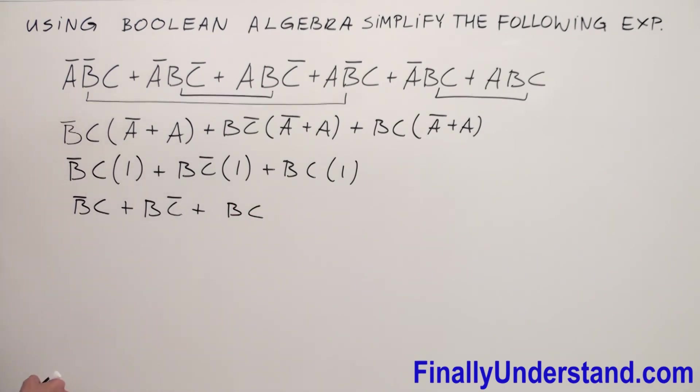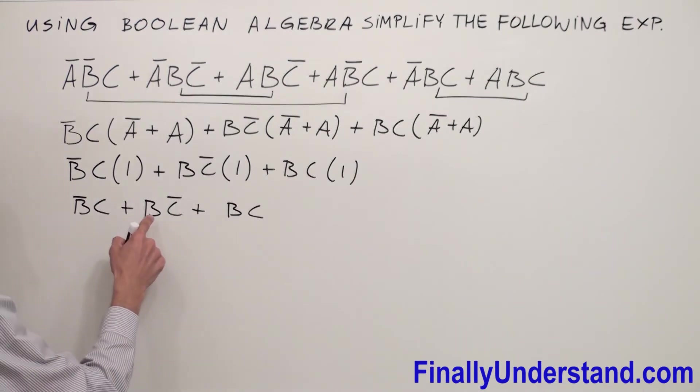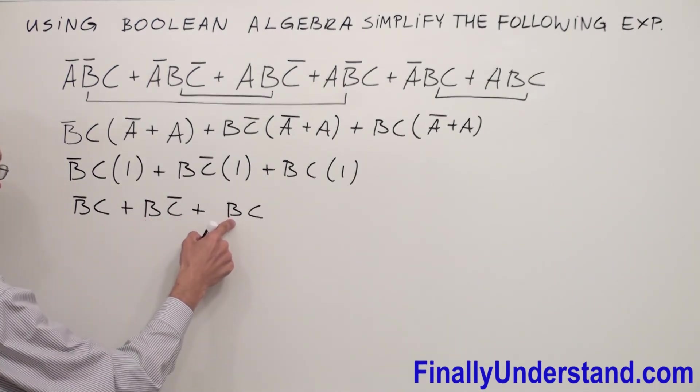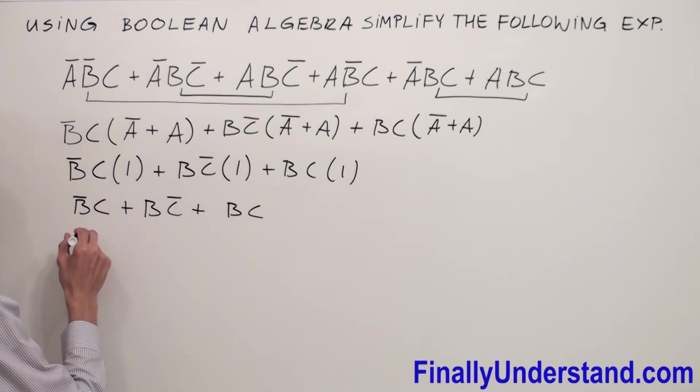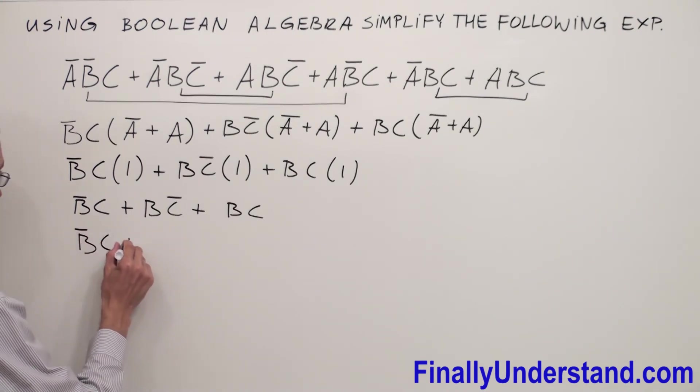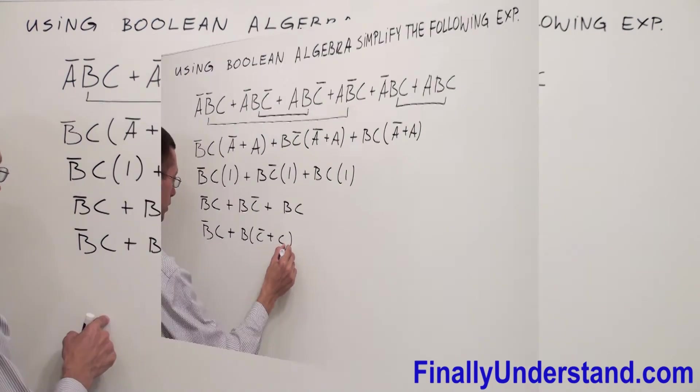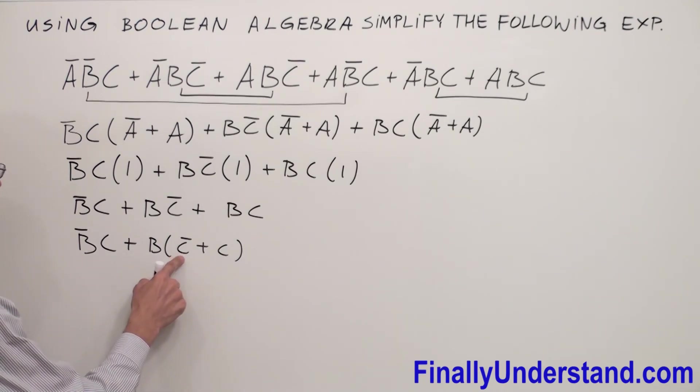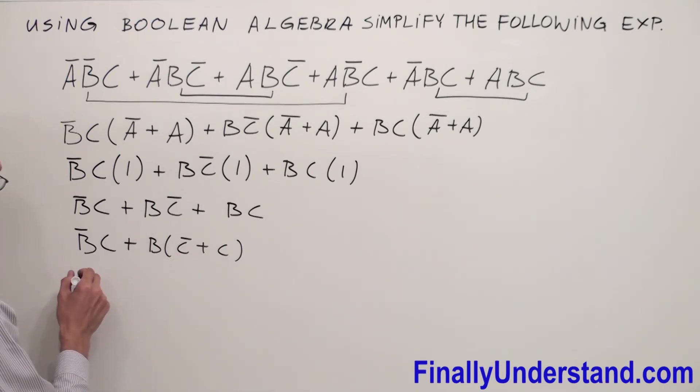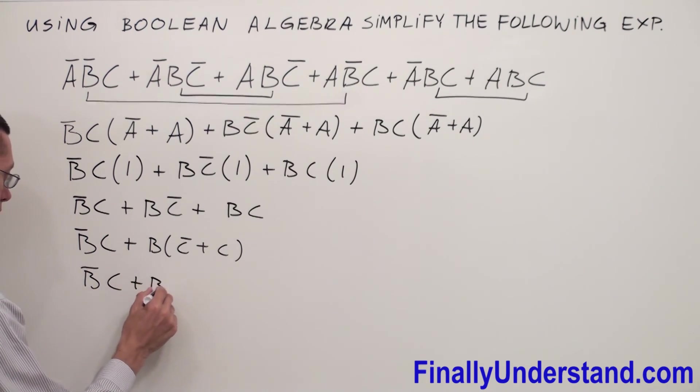Take a look at what we can factorize over here. I have B and B. I'm going to factorize B; C̄ or C gives me one. That's why I'm going to write B̄C or B times one. One and B will give me B. That's why I'm going to have B̄C or B.